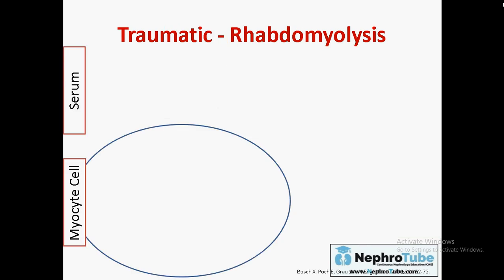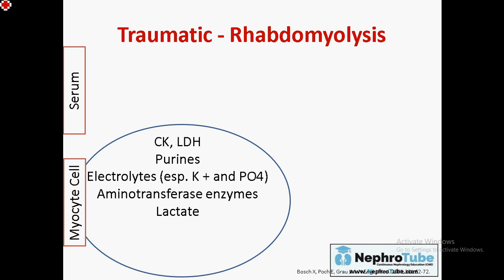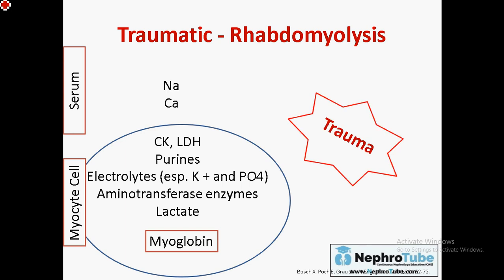To understand how trauma and rhabdomyolysis present in patients with acute kidney injury: consider this circle as the myocyte cell, and outside it is the serum. Inside any myocyte cell you find CK (creatine kinase), LDH, purines, electrolytes — concentrating on potassium and phosphorus — aminotransferase enzymes, lactate, and myoglobin. Outside the cell you find sodium and calcium, the most important electrolytes related to rhabdomyolysis.